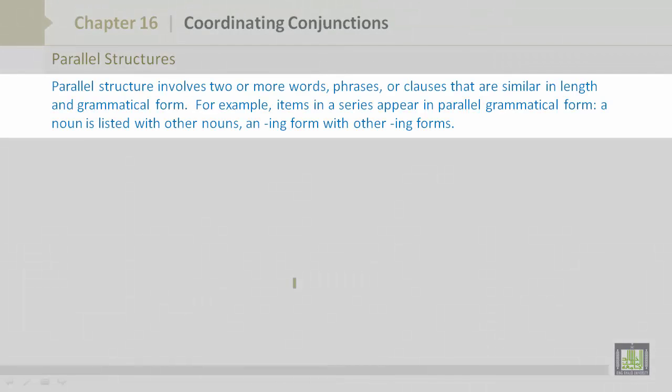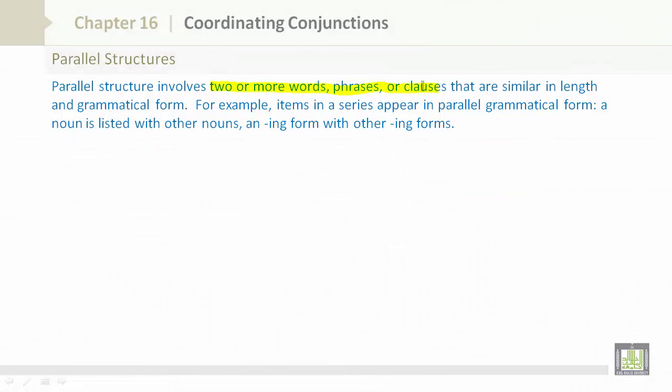Parallel structures. Parallel structure involves two or more words, phrases, or clauses that are similar in length and grammatical form. For example, items in a series appear in parallel grammatical form. A noun is listed with other nouns, such as an ing form with other ing forms.